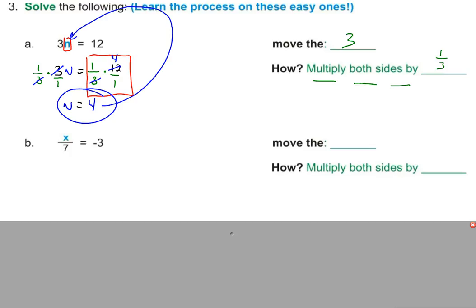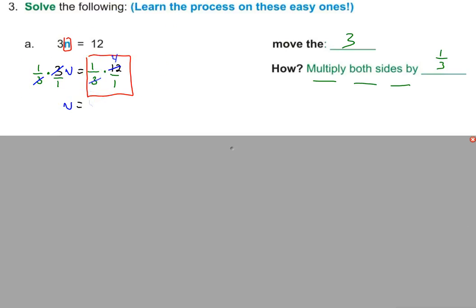So what did we do? Don't do this in your notes. I'm just reviewing. We multiplied the left by one-third. We multiplied the right by one-third. When we did that, here, let me do it this way. Let's see. Can I do this? Awesome. Look at this. Technology, isn't it? Awesome.